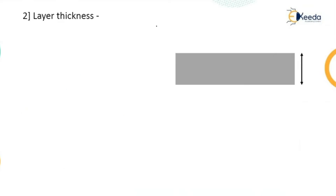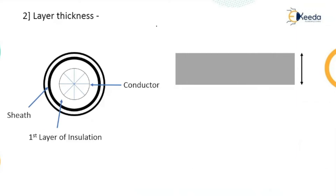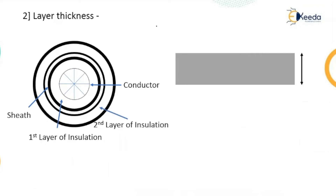Now considering layer thickness: a conductor with a first layer of insulation of higher thickness and a second layer also of higher thickness. The breakdown strength is directly proportional to the thickness. In a layered construction, there may be multiple layers — one, two, three, four, and so on — depending on the voltage for which it is to be used, so the composite layer thickness can be increased.